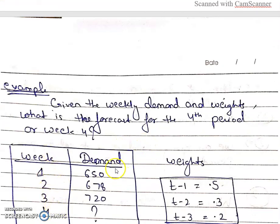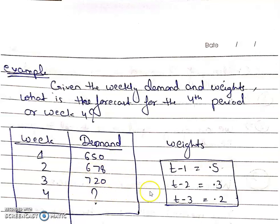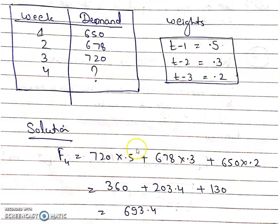This can be understood with the help of this example. There are four weeks and we have demand data till the third week, and we have to forecast the demand for the fourth week. The weights given are: t-1 = 0.5, t-2 = 0.3, t-3 = 0.2. According to weighted moving average method, we assign the highest weight to the most recent period. So we assign 0.5 to the third period, 0.3 to the second period, and 0.2 to the first period, because the most recent period has the greatest impact on the forecast value. The forecast for the fourth period is 693.4.